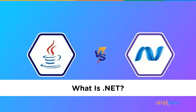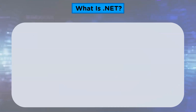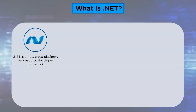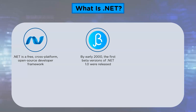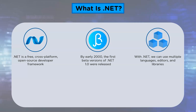Now let us understand what is .NET. .NET is a free, cross-platform, open-source developer framework for building many different types of applications. .NET Core is a cross-platform that supports Windows, Linux, and Mac OS. Microsoft began developing the .NET framework in the late 1990s, and by early 2000, the first beta version of .NET 1.0 was released. With .NET, you can use multiple languages, editors, and libraries to build web, mobile, desktop, games, and IoT applications.